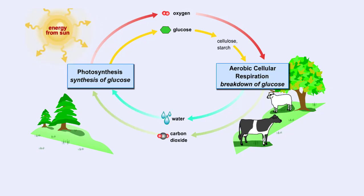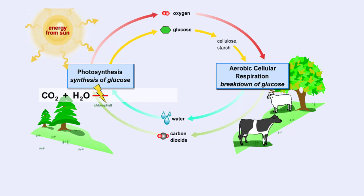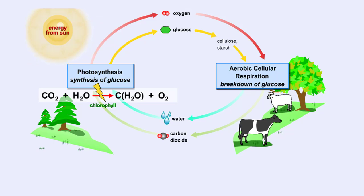The summary equation for photosynthesis is shown here. Carbon dioxide from the atmosphere plus water, in the presence of light and chlorophyll found in plants, produces sugars, and releases oxygen into the atmosphere as a byproduct of these reactions.